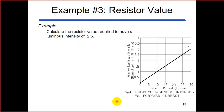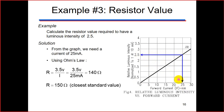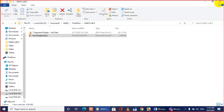As an example: calculate the resistor value required to have a luminous intensity of 2.5. From the graph, a luminous intensity of 2.5 corresponds to a forward current of 25 mA. Using Ohm's Law: R = 3.5 V / 25 mA = 140 ohms. The closest standard value is 150 ohms. You just pick up the closest standard value available in the market.